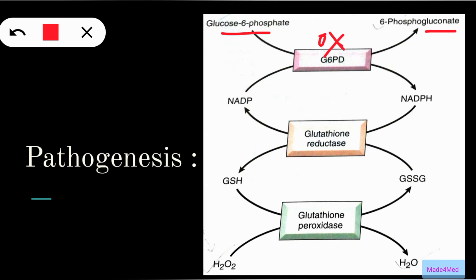Simultaneously, NADP is reduced to NADPH. This NADPH is used for the reduction of oxidized glutathione to reduced glutathione with the help of glutathione reductase. This reduced glutathione is important for conversion of harmful reactive oxygen species like H2O2 to less harmful substances like H2O, thus preventing damage to the RBC.